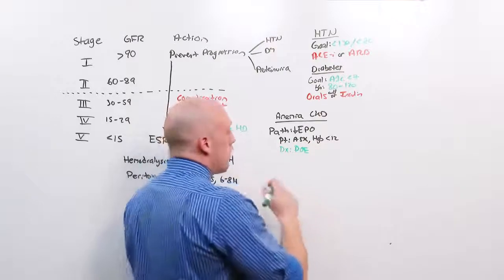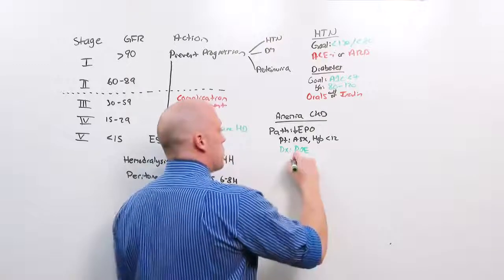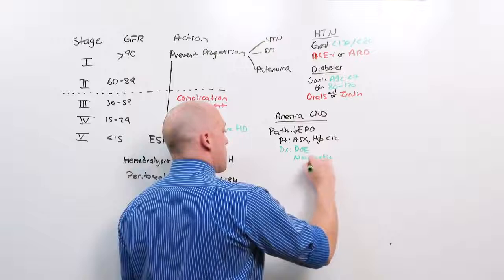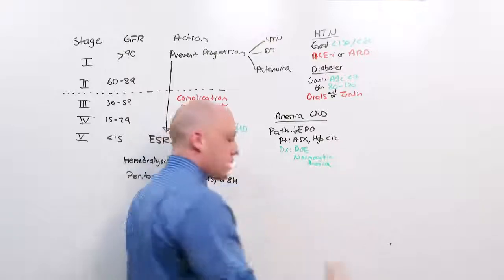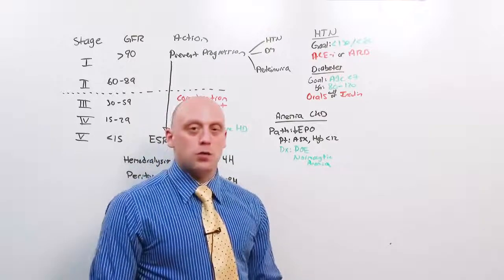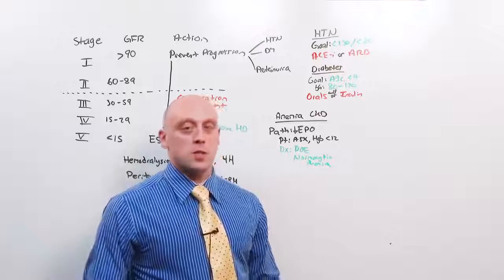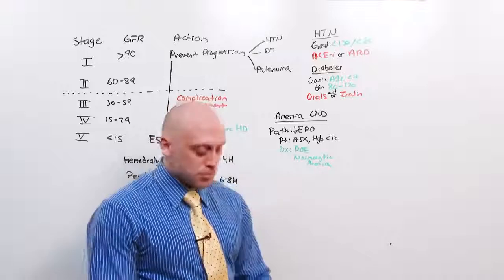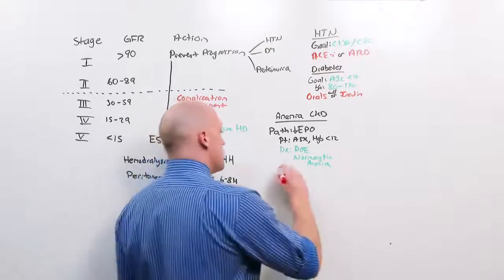Anemia of chronic kidney disease is a diagnosis of exclusion. You want to rule out the other causes of normocytic anemia. Check for iron, folate, B12. Rule out all the causes of anemia, especially nutritional deficiencies, before you label it anemia of chronic kidney disease.